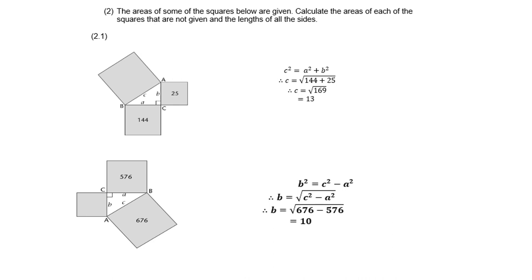The next example: the hypotenuse area is given as 676, and we must find small letter b. Therefore, b squared equals c squared minus a squared. Take note — now we subtract from the hypotenuse. That is 676 minus 576, which is 100. The square root of 100 is 10.